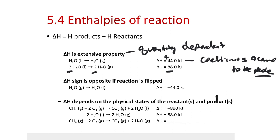What happens if we flip the reaction? If we flip the chemical reaction to water gas going to water liquid, just as we'd expect for a state function, delta H is a path-independent function — if we flip the reaction, we just flip the sign of delta H. So we go to minus 44.0 kilojoules, an exothermic reaction. Converting a mole of water vapor into a mole of liquid water releases 44 kilojoules.